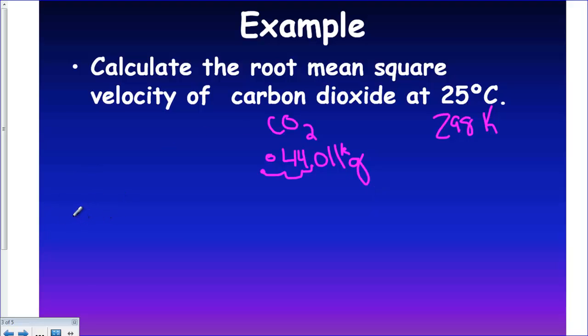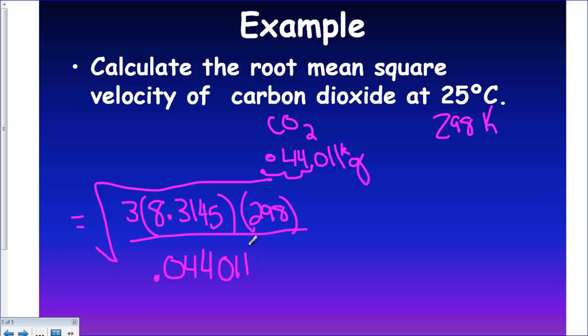Now we can just straight up plug this into the equation. We have the velocity equal to the square root of 3 times our R, which was 8.3145, times the T, which was 298, and then we're going to divide that by the molar mass in kilograms. When I solve these, I solve the top, and then I divide the top by the bottom, and then I do the square root. So I try to do it in different steps, because then the calculator and me are both on the same page about what's supposed to be going on.